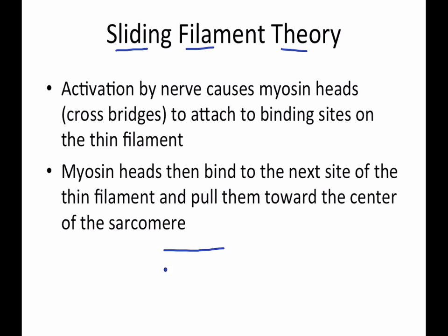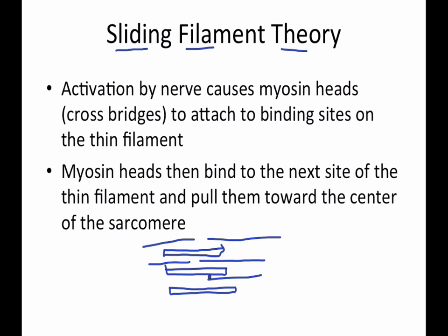If you remember from a couple of videos ago, you had the thicker filaments — the myosin filaments — and then the thin filaments on either side of those. These don't actually get shorter and more compacted. What really happens is these thin filaments just slide further inward: one side slides this way, the other slides the other way — they're just sliding past each other, being pulled towards the center of each sarcomere.